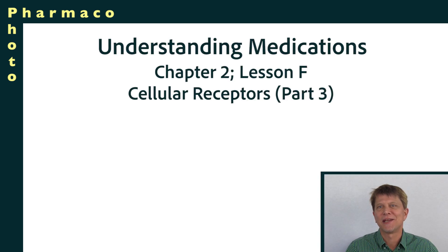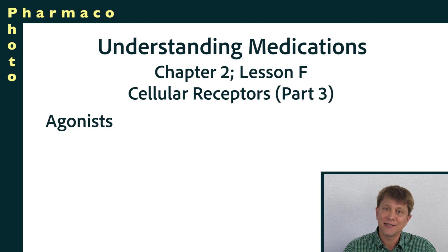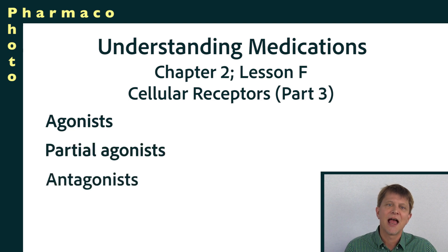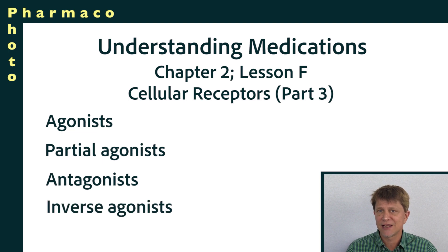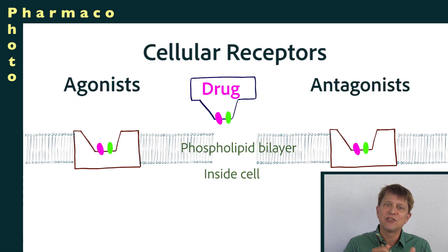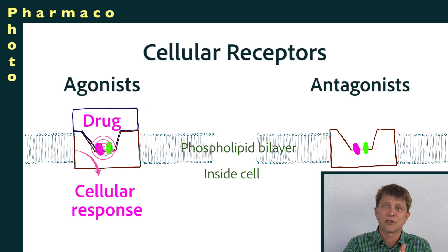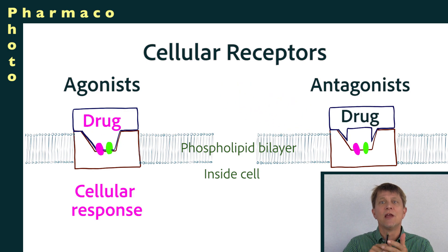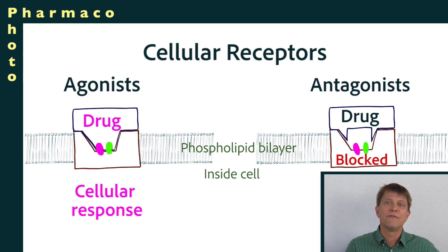Welcome back to our course on understanding medications. In this lesson we're going to make sure you really understand what an agonist is, as we'll be talking about agonists throughout this chapter. We'll also compare that to what else can happen at a receptor — partial agonists, antagonists, and inverse agonists. Broadly, medications can be considered agonists, where they bind to the receptor and cause the same physiological response as the natural ligand, or antagonists, where they bind to the receptor but don't cause that physiological response and instead block it.